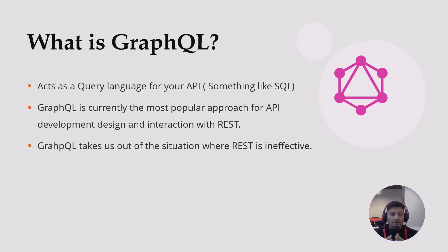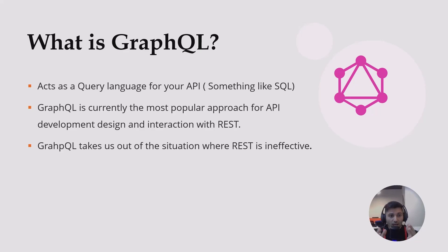GraphQL is currently the most popular approach for API development, especially for mobile-oriented development. We use REST for desktop-oriented APIs, and for mobile-oriented APIs we actively use GraphQL. GraphQL takes us out of the situation where REST is ineffective. In this tutorial, we will focus on the differences between GraphQL and REST, and we will mention all the advantages of GraphQL.